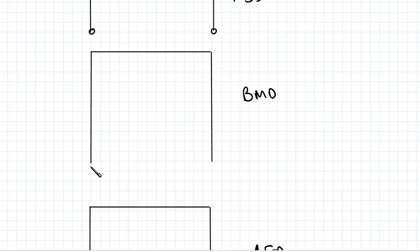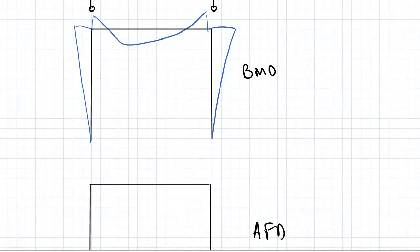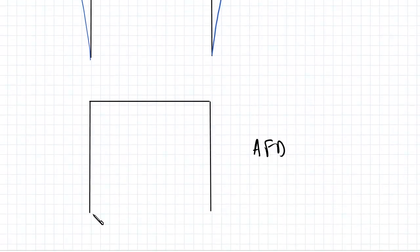So it would look something like this. I haven't drawn this to scale or to relative values, it should be symmetrical and it should look something like that and the AFD would look something like this.